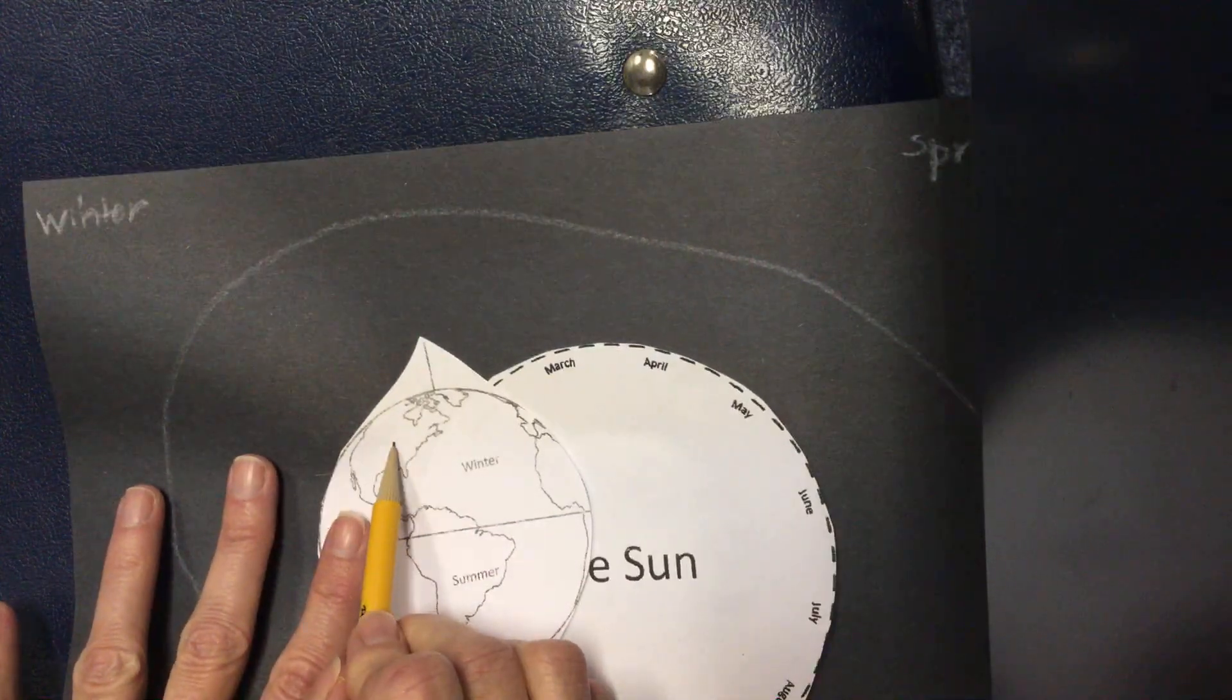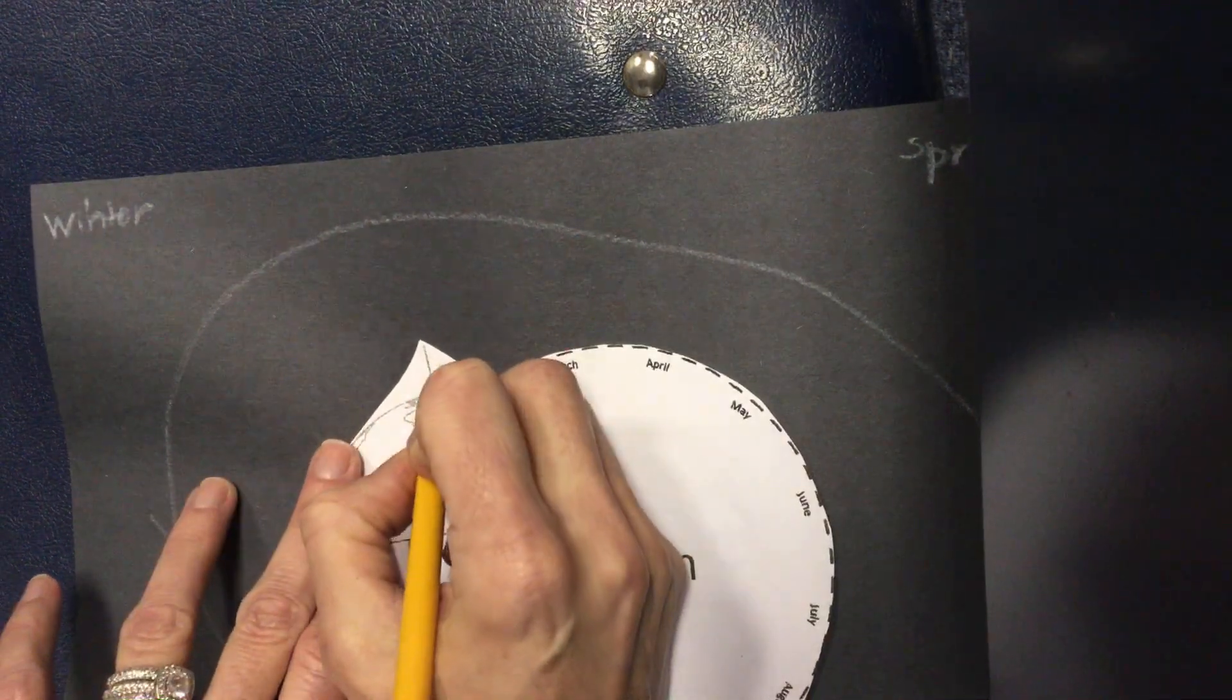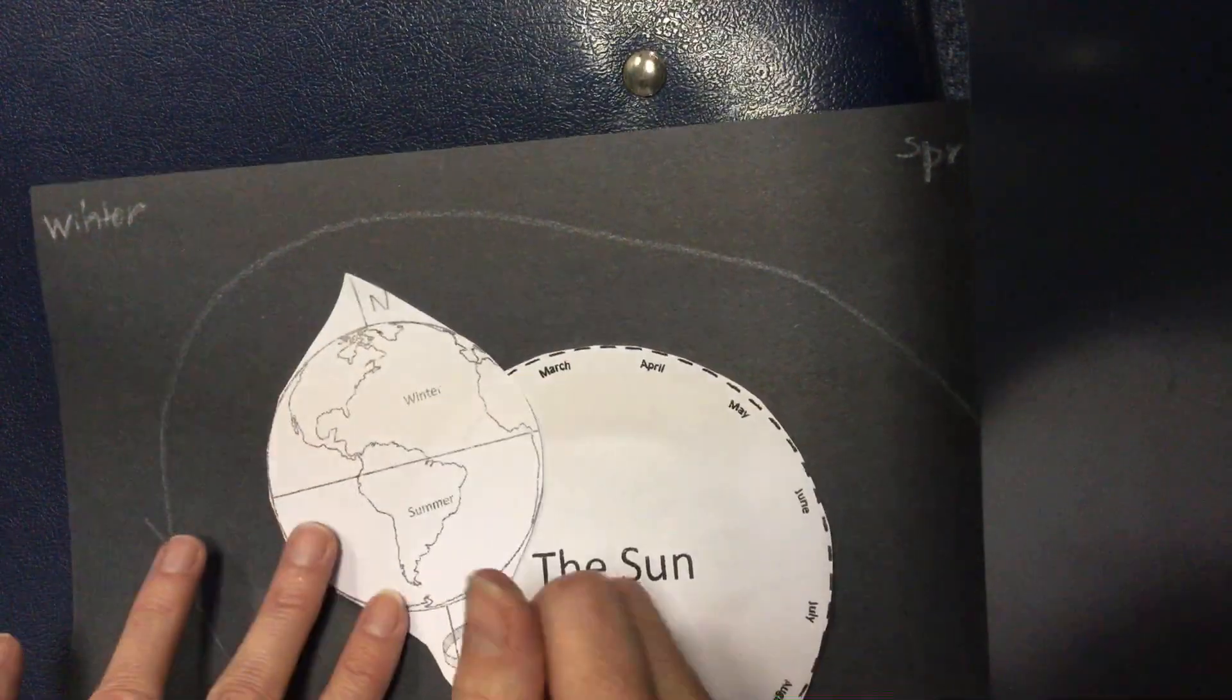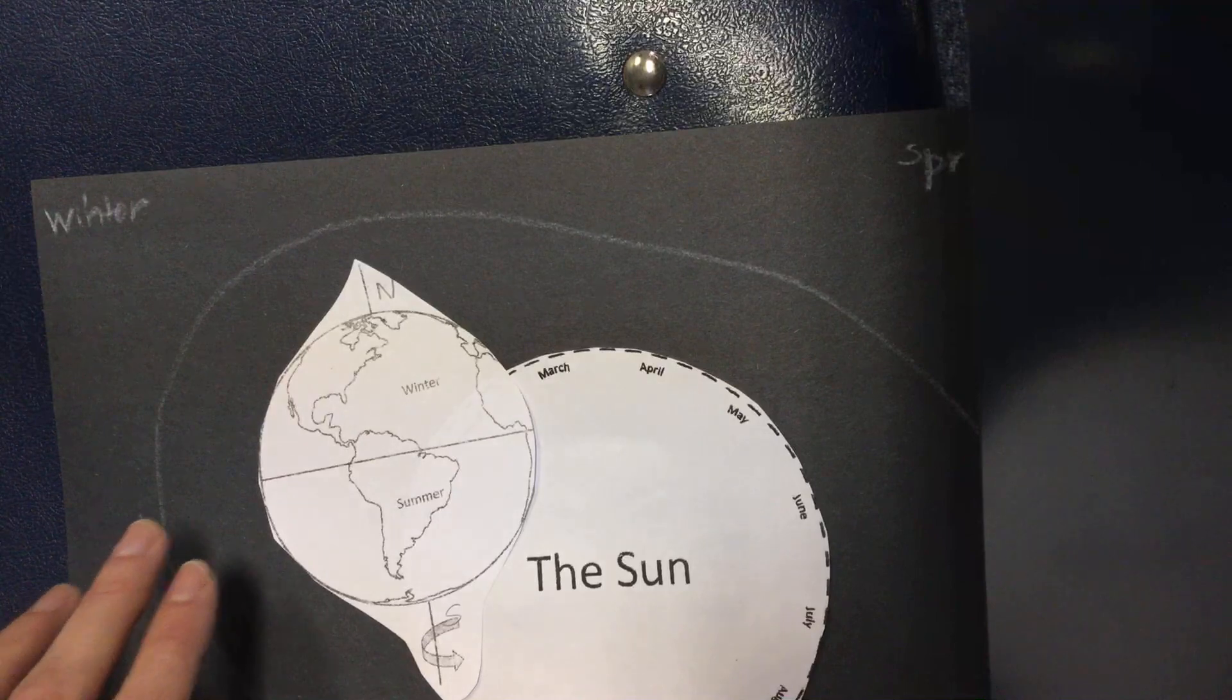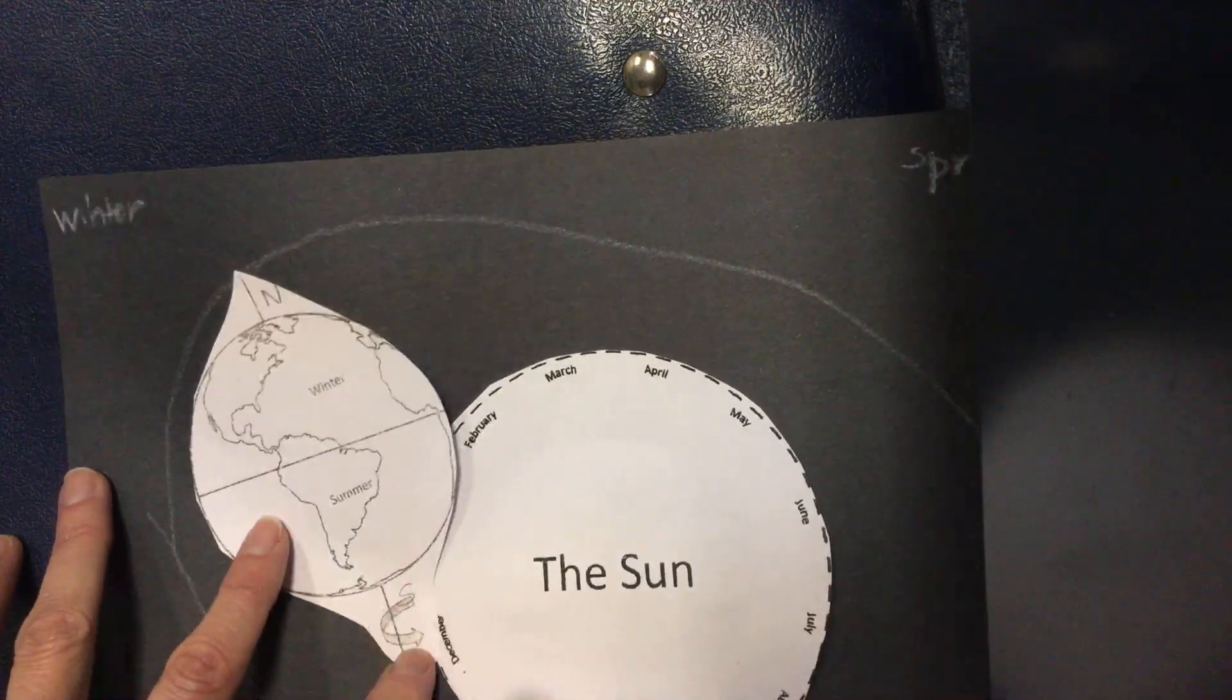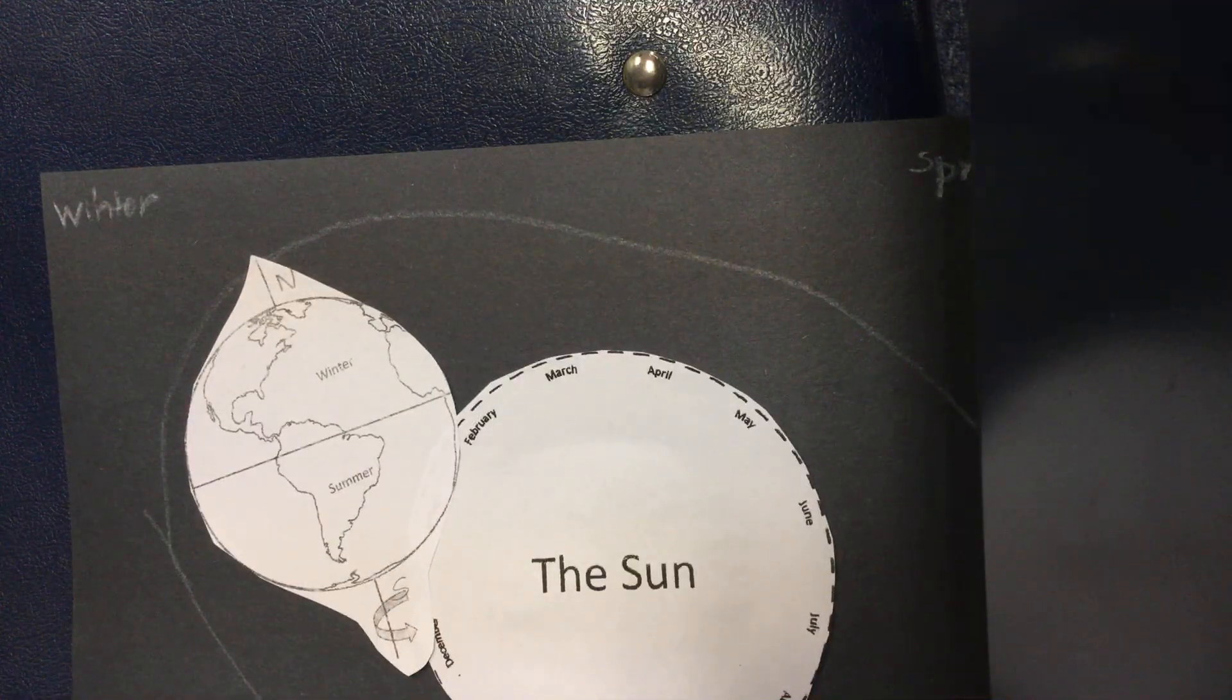You can color your Earth—the land green and the water blue, which I'll show you the final product that I have mine done like that. This is of course the north and this is the south. This is your axis, the imaginary line that the Earth rotates around. Then you can color this yellow, and this yellow, and the little arrow that shows the rotation.